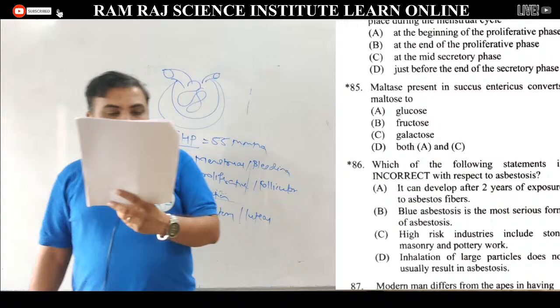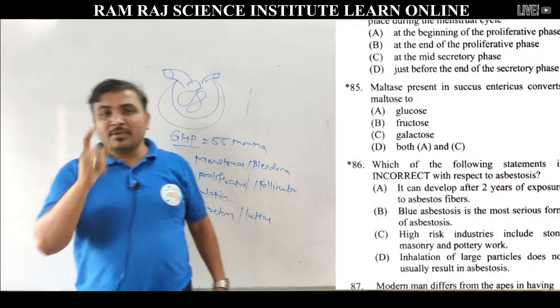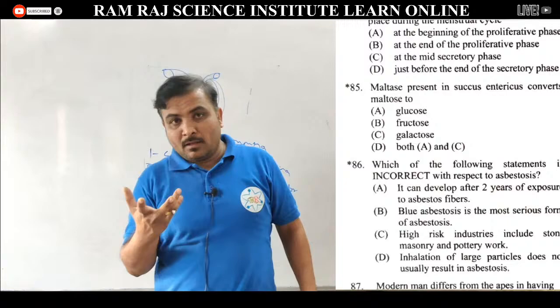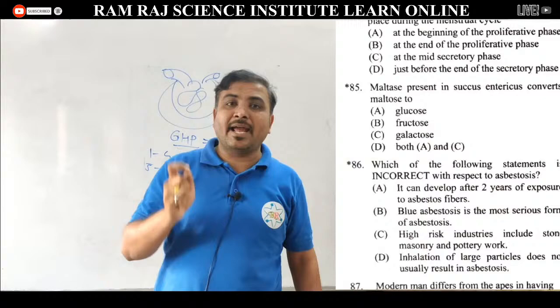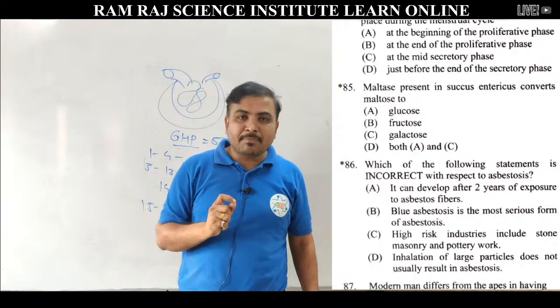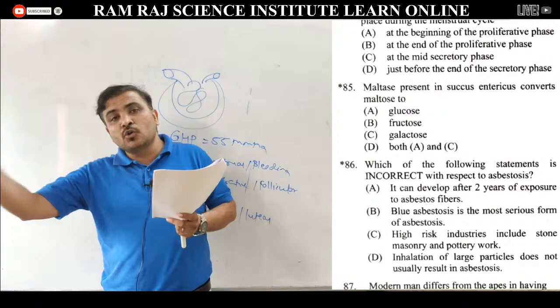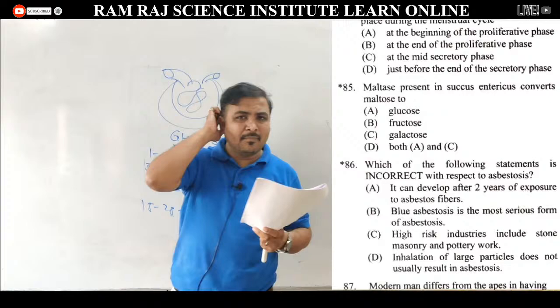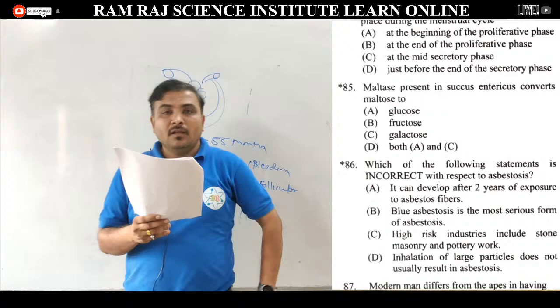Question 85: maltase present in succus entericus converts maltose to. Succus entericus intestinal juice होता है. उसमें maltase होता है जो maltose को glucose में convert करता है — glucose plus glucose, दो glucose units मिलते हैं. तो notebook properly पढ़ना है — सब कुछ वहाँ दिया है. Answer is option A — glucose.